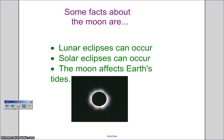Solar eclipses are when the new moon briefly moves between Earth and the sun. The moon casts its shadow on Earth. Solar eclipses are much more rare than lunar eclipses.